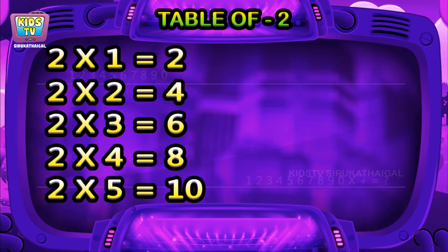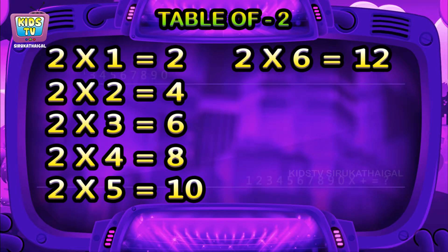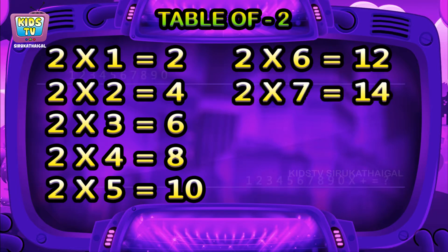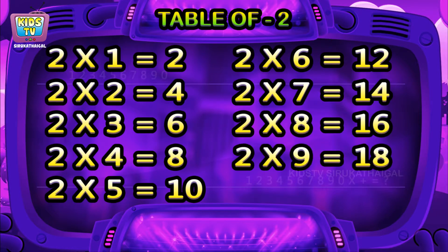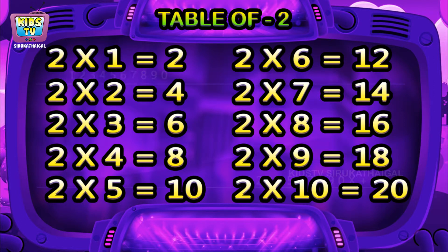Two fives are ten, two sixes are twelve, two sevens are fourteen, two eights are sixteen, two nines are eighteen, two tens are twenty.